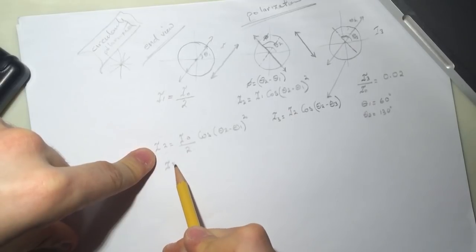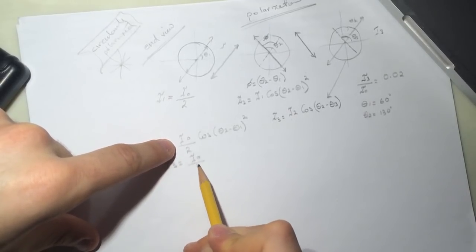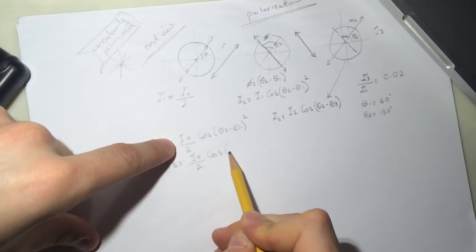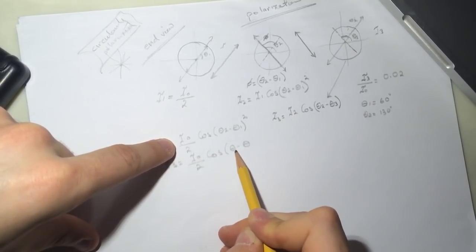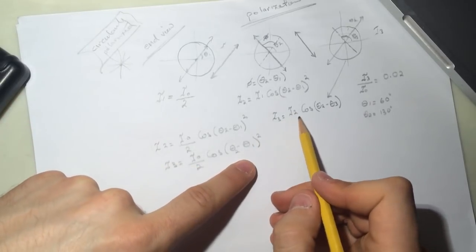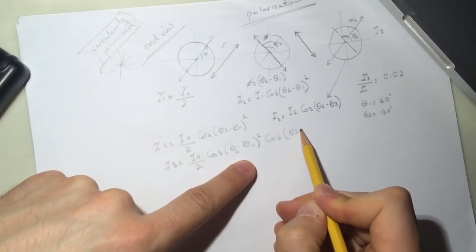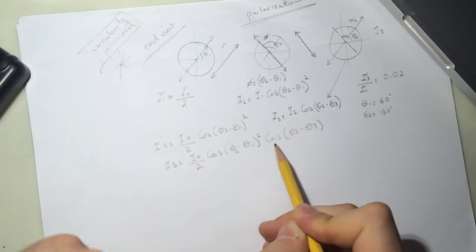So it's i3 will be equal to i2 is i0 over 2 cosine of theta minus theta 2 minus theta 1 squared times cosine of theta 2 minus theta 3.